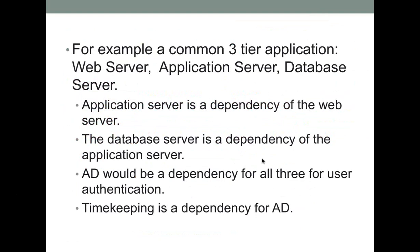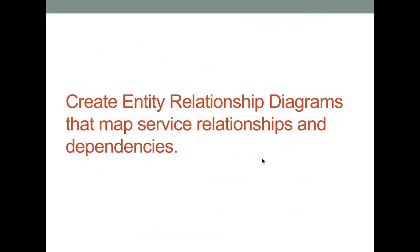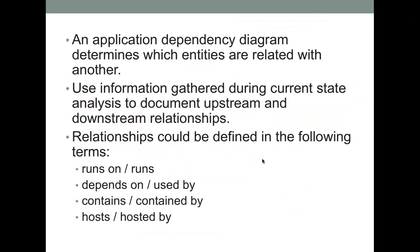The next thing is creating entity relationship diagrams that map service relationships and dependencies. This is simply a diagram determining which entities relate to what — showing the relationship between the web server, application server, and database, and what all three depend on. We need to define those relationships: what runs on what — for example, virtual machines run on ESXi hosts, and ESXi hosts are clustered together. Then what is dependent on or used by what — the application server depending on the database. And containers like the cluster and hosts.